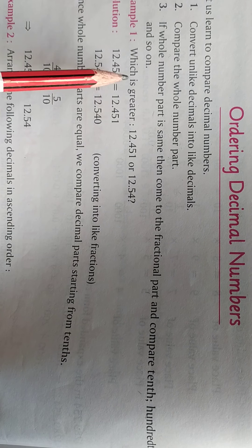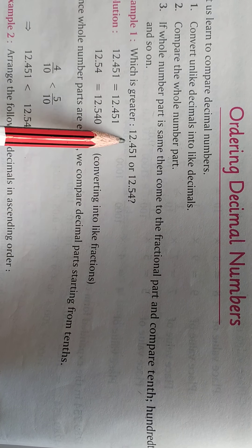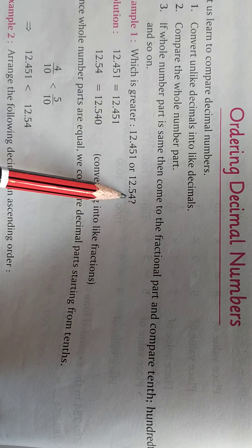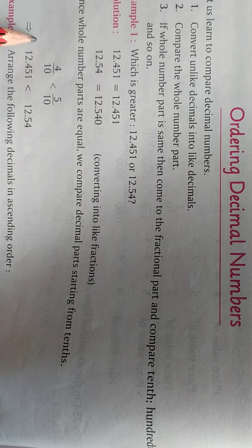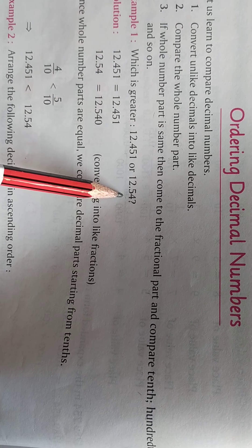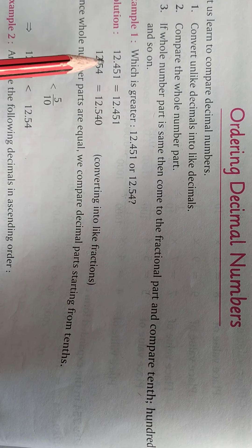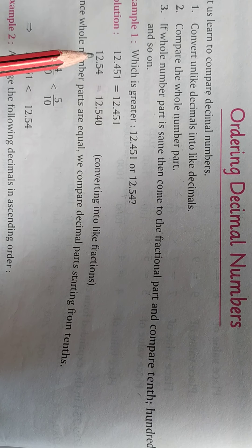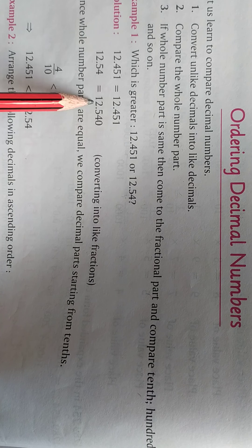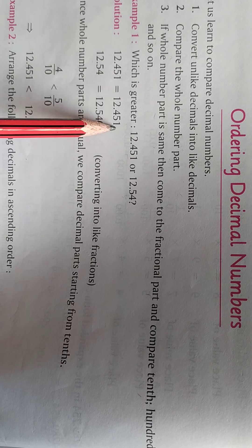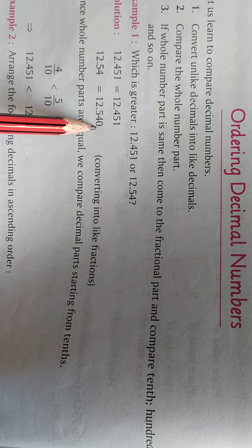Let us take one example: which is greater, 12.451 or 12.54? First, convert into like decimals. Here 12.451 has three decimal places and 12.54 has only two. So convert 12.54 to three decimal places: 12.540. Now both numbers have three decimal places.